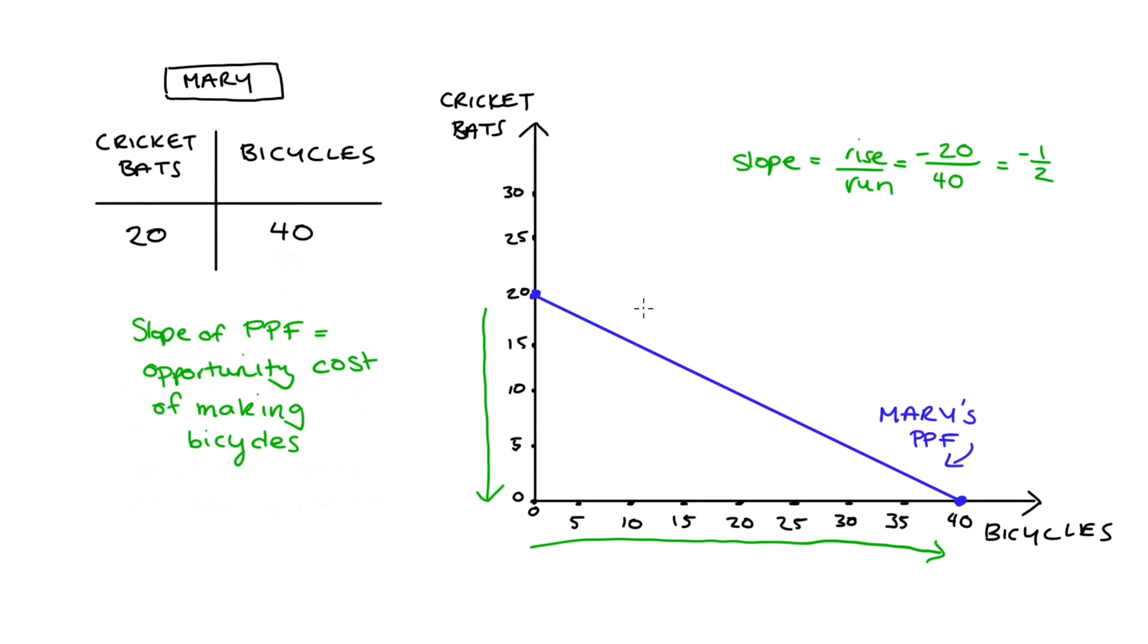For instance, if we were going from making 20 cricket bats and zero bicycles, if we increased the number of bicycles by one, we would give up half of a cricket bat, so we're left with 19.5 cricket bats.